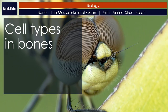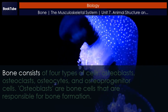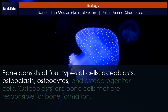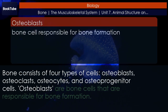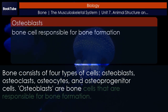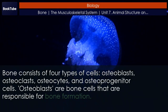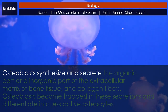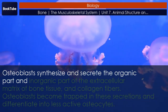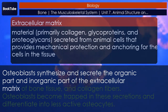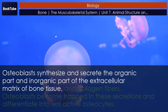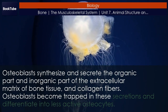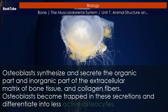Bone consists of four types of cells: osteoblasts, osteoclasts, osteocytes, and osteoprogenitor cells. Osteoblasts are bone cells responsible for bone formation. Osteoblasts synthesize and secrete the organic and inorganic parts of the extracellular matrix of bone tissue and collagen fibers. Osteoblasts become trapped in these secretions and differentiate into less active osteocytes.